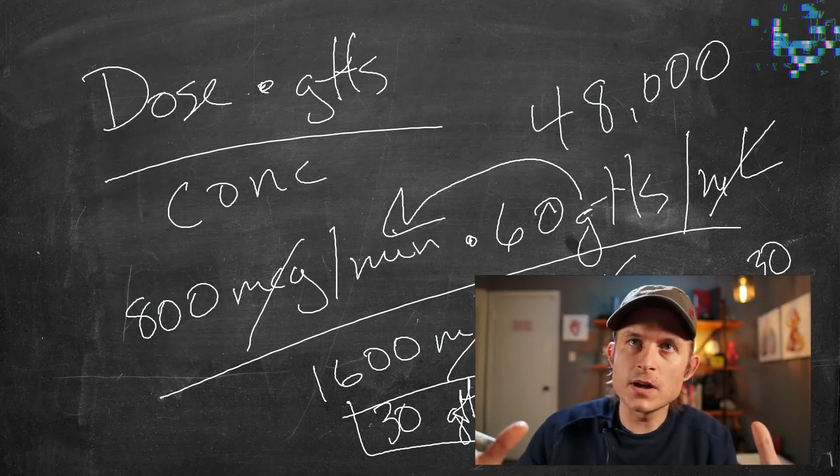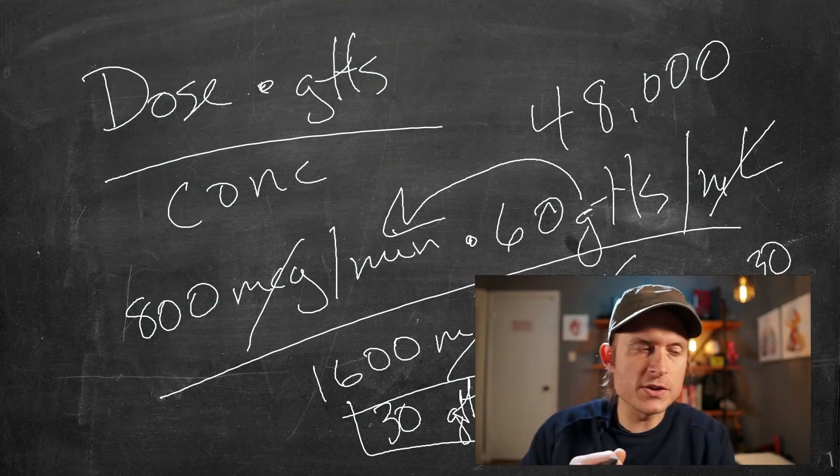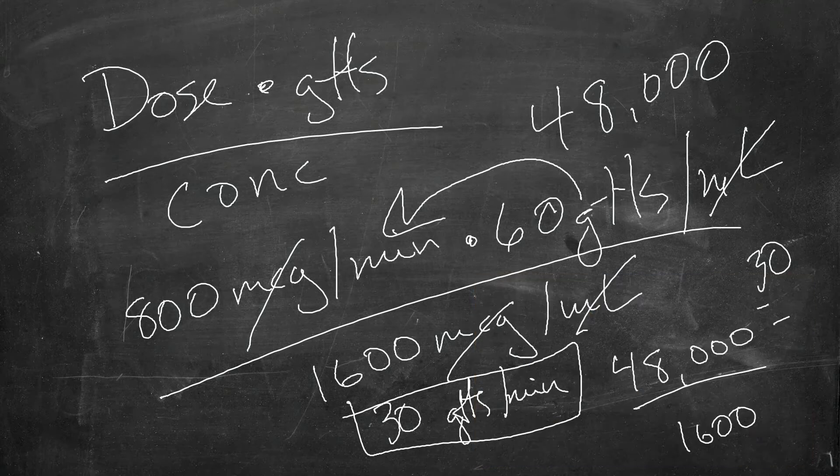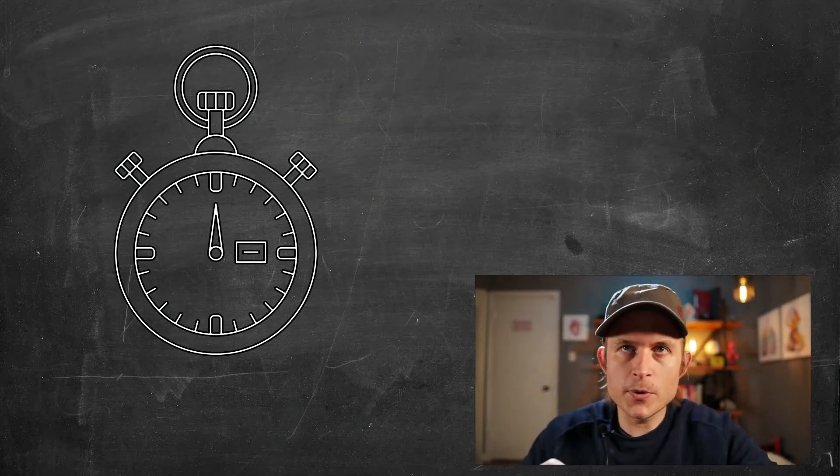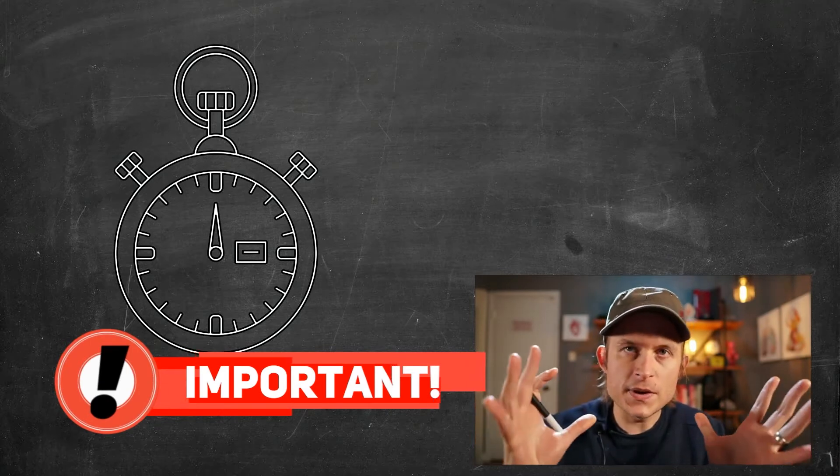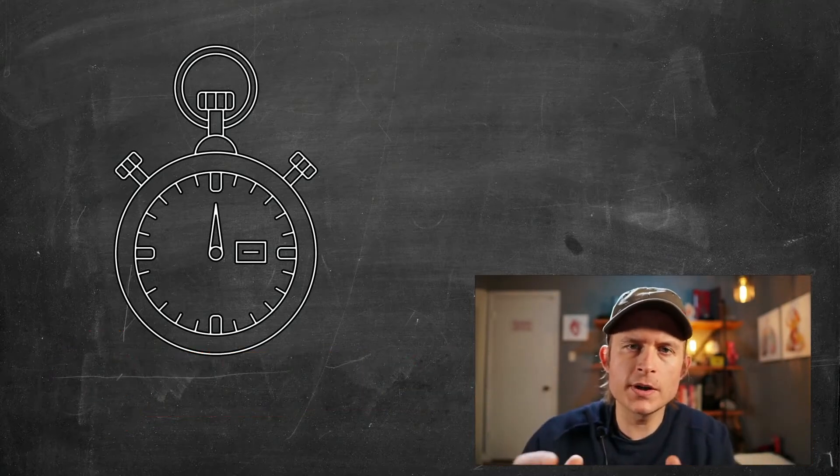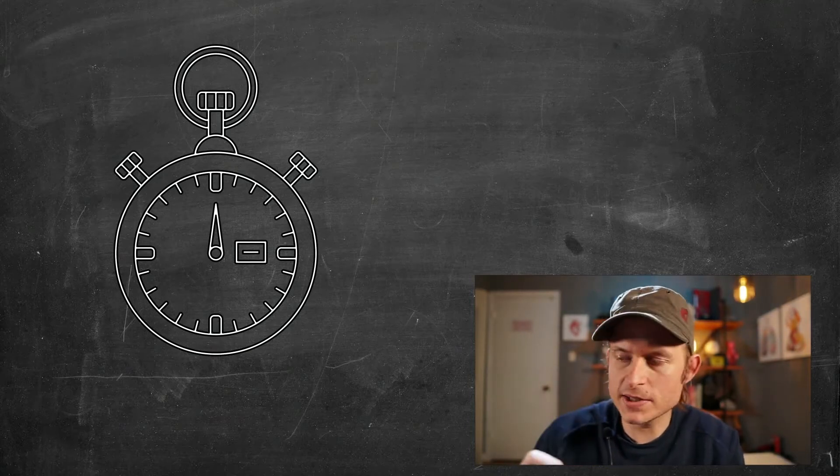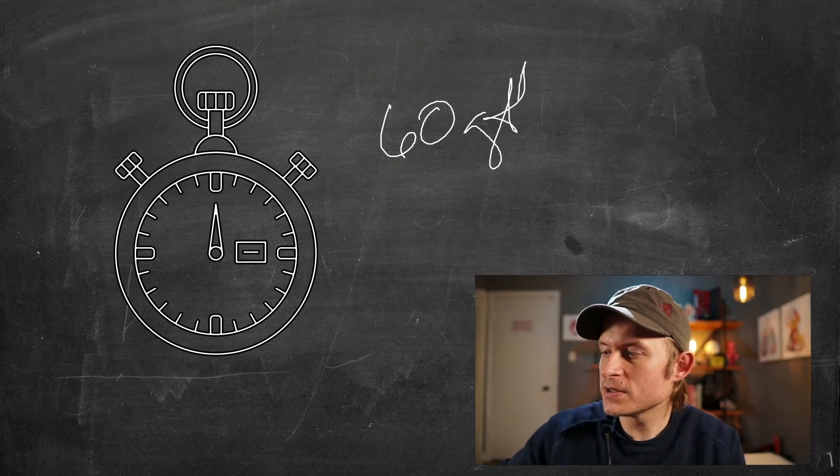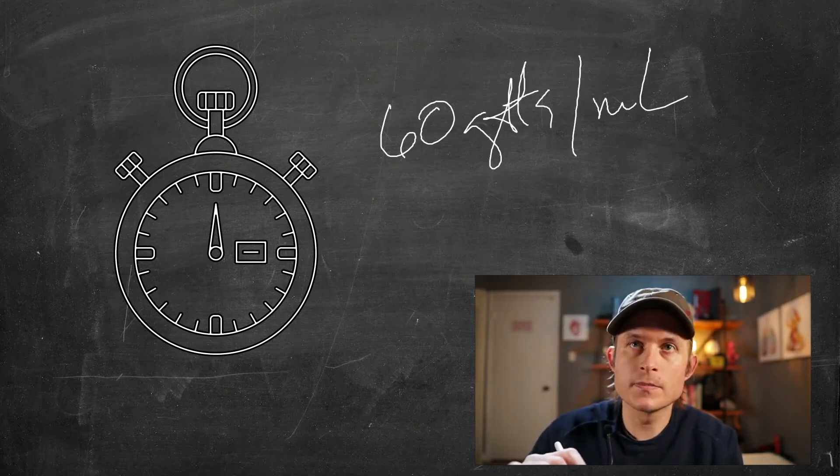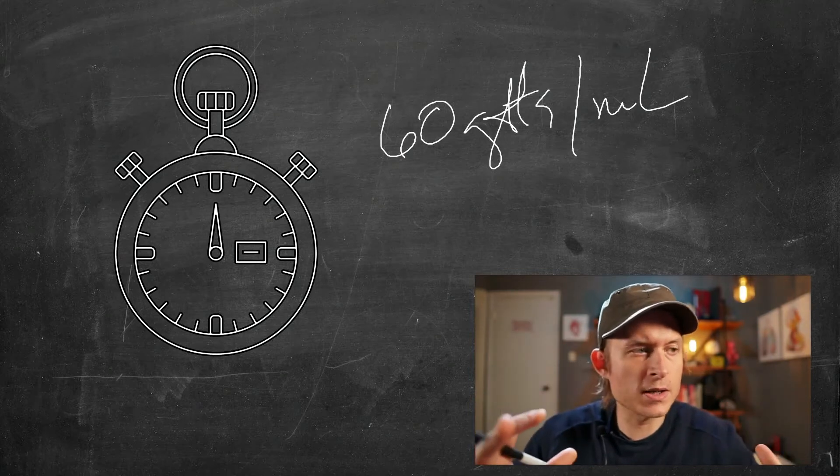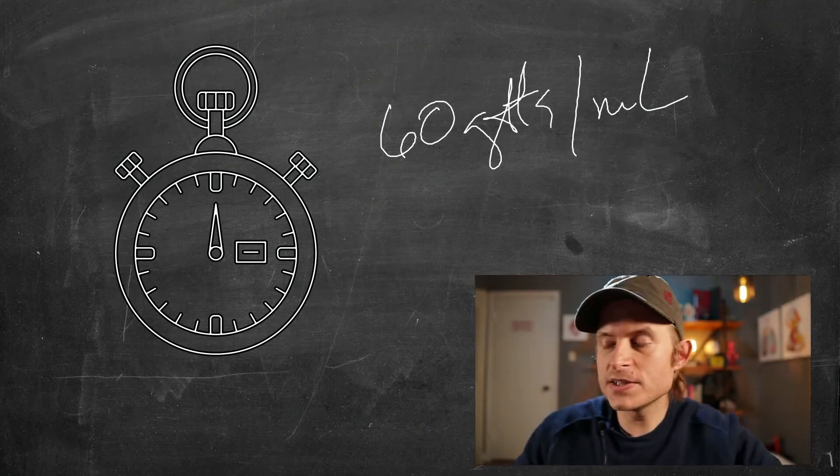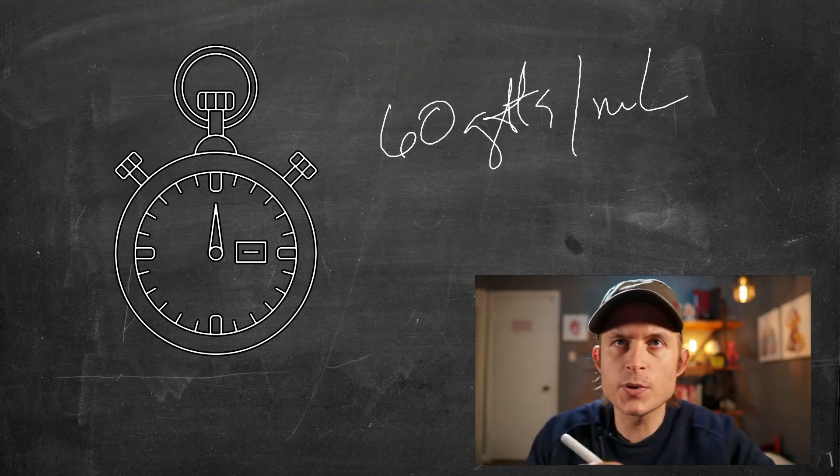So this is the actual equation that we would do in long form if we didn't know the clock method. But lucky for you, I'm going to teach you the clock today. First and foremost, you have to remember that the clock will only work if you are using a 60 drop set. So you have to have a 60 drop set for the clock to work. And that's because it takes advantage of the number of minutes on a clock face, 60. If you don't have a 60 drop set, clock method won't work.